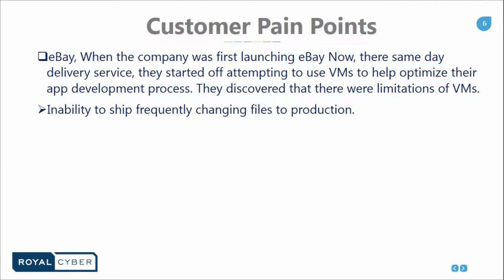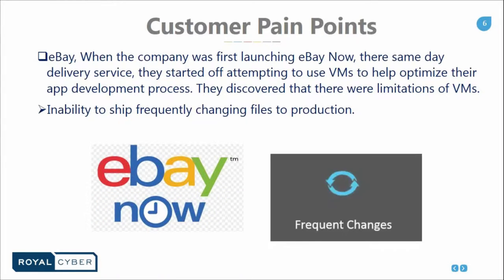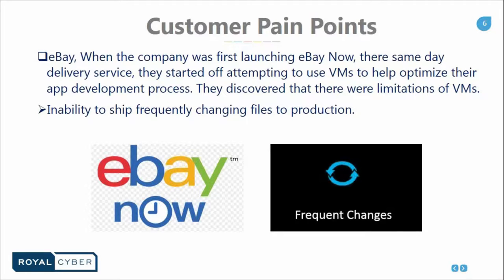Moving to the second customer pain point — scenario two. When eBay launched eBay Now, a same-day delivery service, they started off attempting to use VMs to help optimize their app development process. But they soon discovered limitations of virtual machine technology. The inability to ship frequently changing files in production meant they needed to frequently bring down the production instance. This bring-down time was significantly large and very frequent. The pain here is production server downtime — no company wants to down their production instance for such a large time. You can't afford such large downtime in today's competitive business.